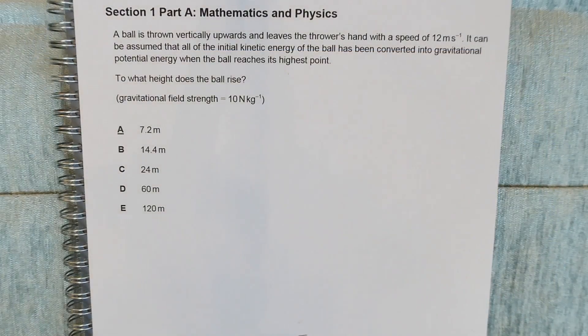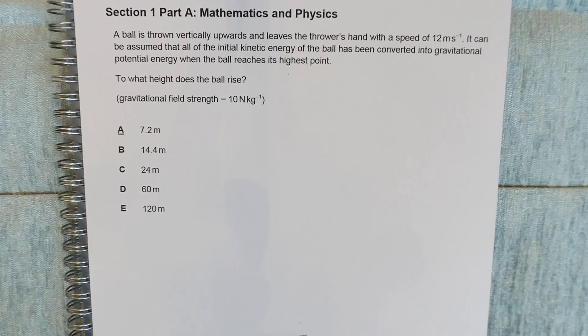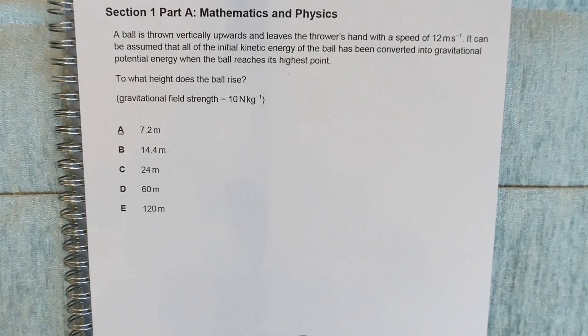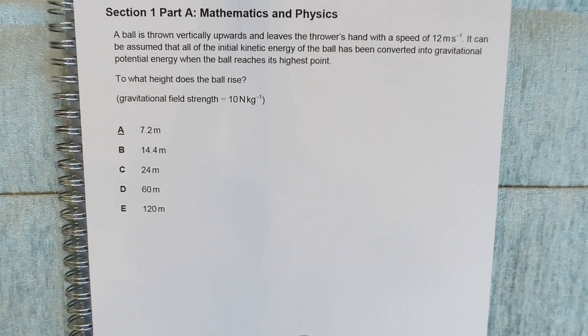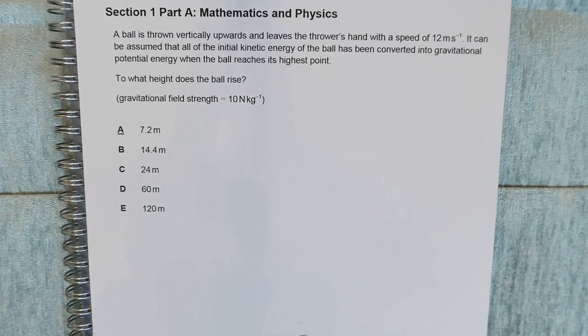So this is our first question from section one, part A, which is the standard maths and physics. A ball is thrown vertically upwards and leaves the thrower's hand with speed of 12 meters per second. It can be assumed that all of the initial kinetic energy of the ball has been converted into gravitational potential energy when the ball reaches its highest point. To what height does the ball rise?